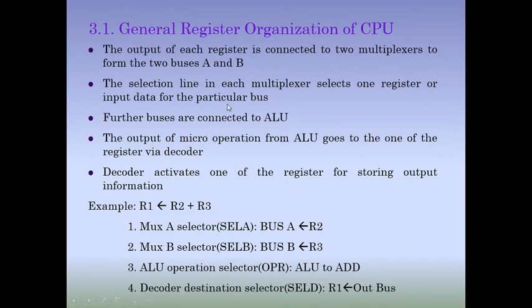For example, the operation R1 ← R2 + R3 means we add the contents of registers R2 and R3 and store the result in R1. First, multiplexer A selects register R2 — so Bus A carries the content of R2.